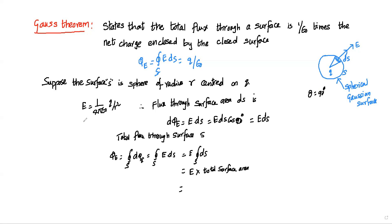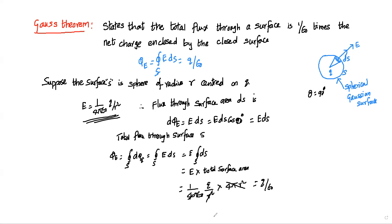E is equal to 1 by 4 pi epsilon naught into q by r square. We substitute this value. The total surface area of the sphere is 4 pi r square, so 4 pi r square in the numerator and denominator cancel out. Finally, phi equals q by epsilon naught.